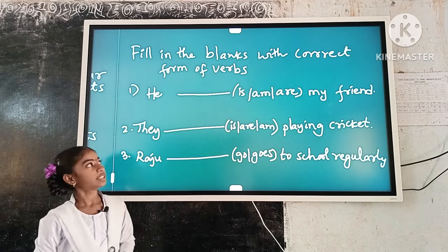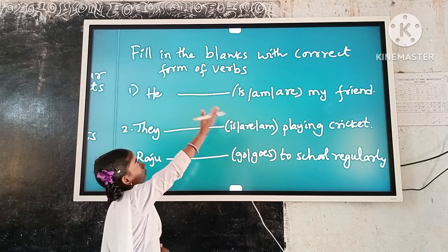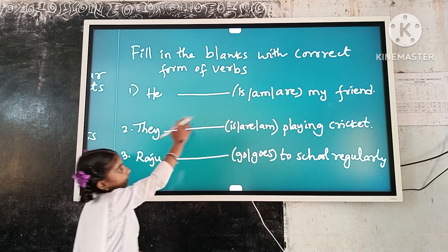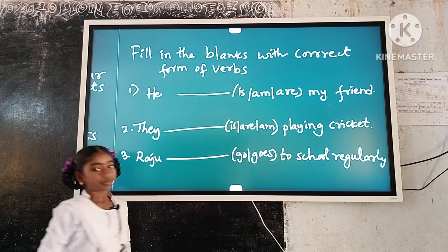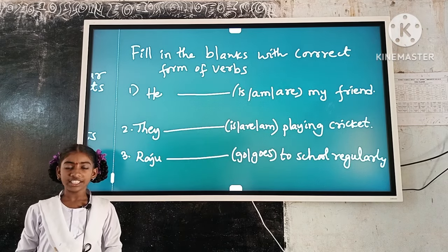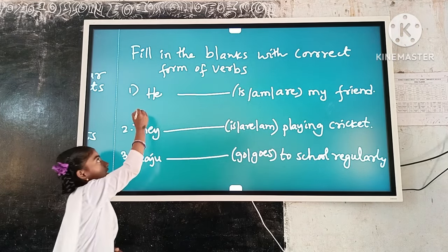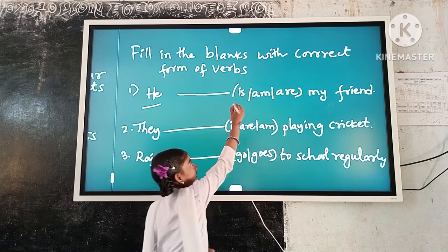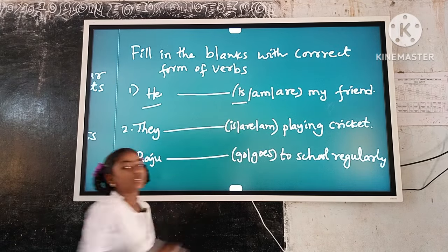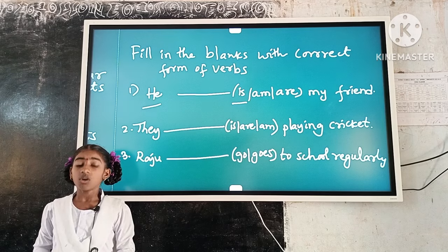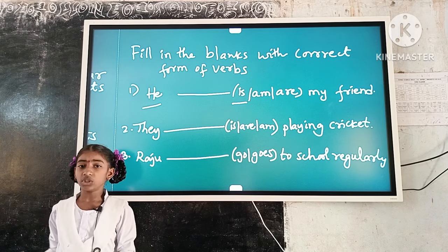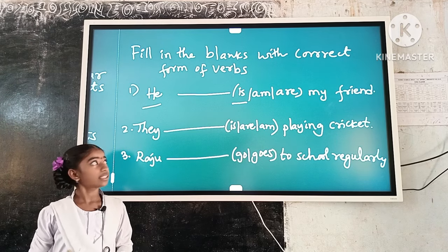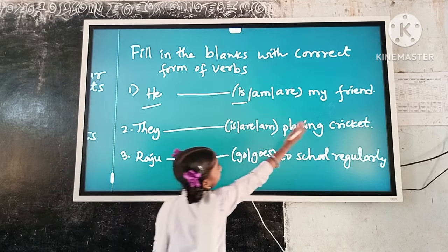Fill in the blanks with the correct form of the verb. Example number 1: He dash my friend. Here, the subject 'He' is singular. 'Is' is a singular verb form. So, singular subject and singular verb form agree. The answer is: He is my friend.